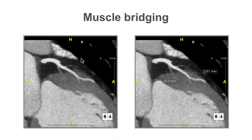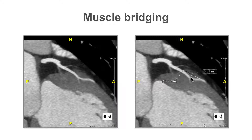Here is an example of the muscle bridging from this case. We can see that the coronary artery passes in the epicardial fat over the surface of the epicardium, before diving down into the myocardium and emerging out again. When evaluating muscle bridging, it is customary to measure not only the length of the muscle bridge, but also the depth. Note also that the calibre of the myocardial bridged segment is smaller than that of the normal unbridged segment proximal to the muscle bridging.